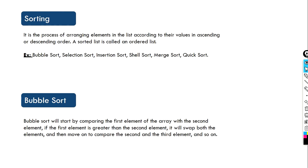Bubble sort starts by comparing the first element of the array with the second element. Suppose we are sorting in ascending order — if the first element is greater than the second element, the two elements will be swapped, meaning the smaller element is moved towards the left side of the array. In this way, swapping based on greater or lesser elements continues until the array is sorted at the end of the iteration.